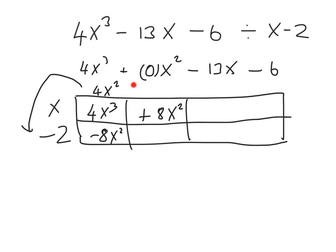We divide the x into the 8x squared to get plus 8x. Then we multiply the 8x by the minus 2 to get minus 16x. Again we ask ourselves what do we need to add to minus 16x to get minus 13x. We need to add plus 3x. Back to the start, we divide the x into the 3x to get plus 3, which means the end of the loop.